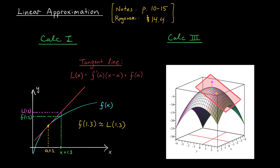You can see that I've used the notation capital L of X to denote the value of our tangent line at a given point X. We're going to use a similar notation in Calc 3. The value of the tangent plane at a given point X, Y will be denoted by capital L of X, Y. Why capital L? Because just like the tangent line in Calc 1, the tangent plane in Calc 3 gives us a linear approximation to the values of our function.